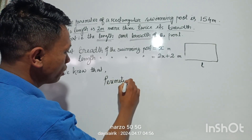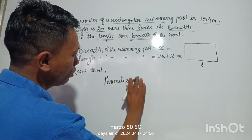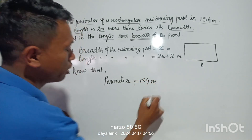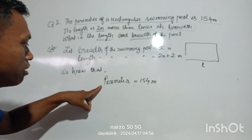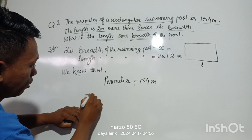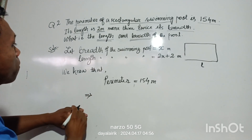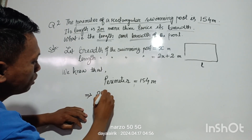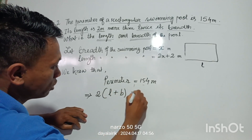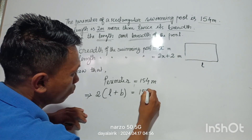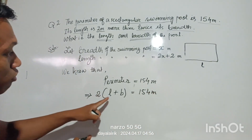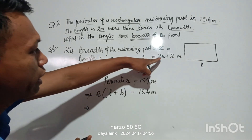The perimeter is 154 meters. This is the formula for the perimeter of a rectangle. The perimeter equals 154 meters — this is the length and breadth substituted into the formula.